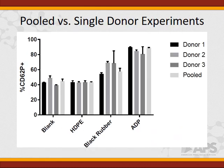Lastly, we measured the effect of multiple donors on this test. A common practice in hemocompatibility testing is to use more than one donor to account for individual variation. We see that pooled blood from three donors gives a similar response to each individual donor, suggesting that combining blood from three donors is appropriate for this test.